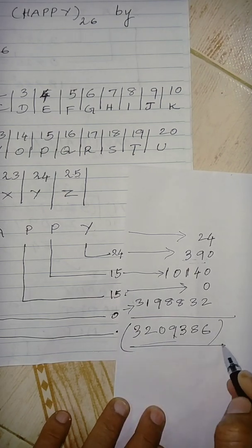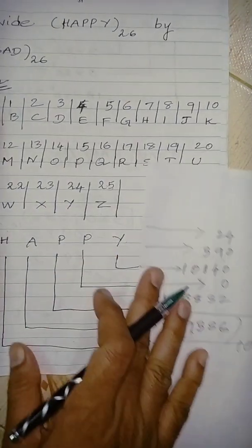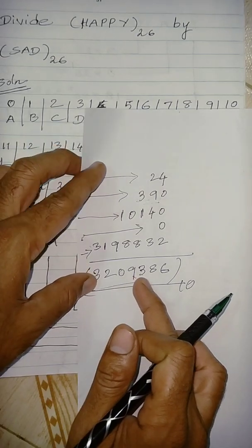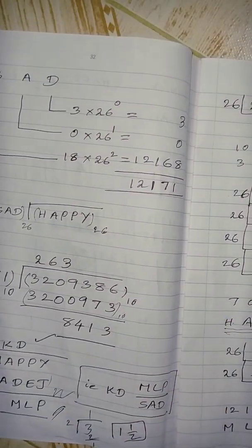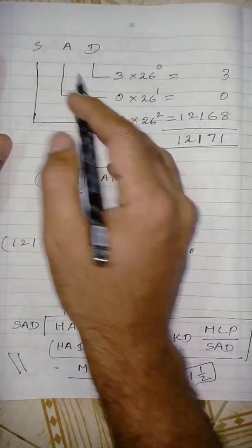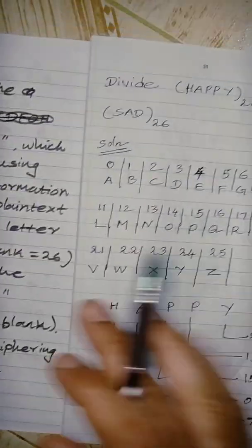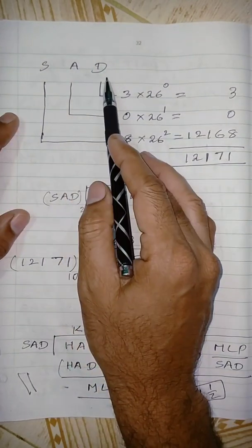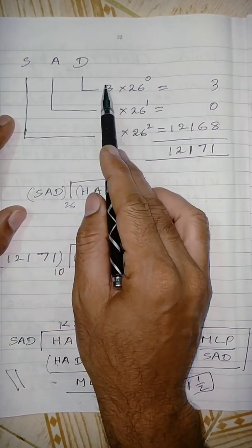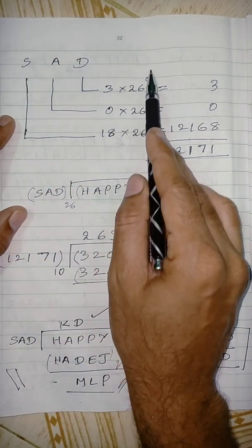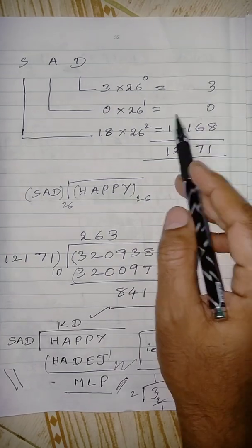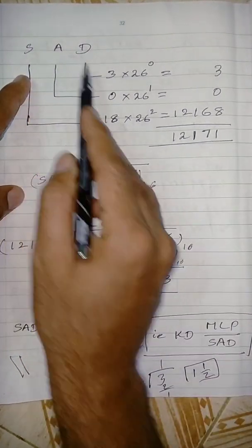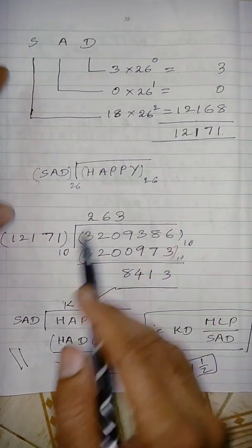The decimal value of HAPPY is 3,209,386 — this is base 10. If we have base 26, we convert decimal 3,209,386. If we convert to decimal first, it will be easy to divide. Now for SAD — if we convert the divisor SAD: D label 3, A label 0, S label 18. Using 26 power 0, 26 power 1, 26 power 2 in similar manner. The total SAD corresponding decimal is 12,171.